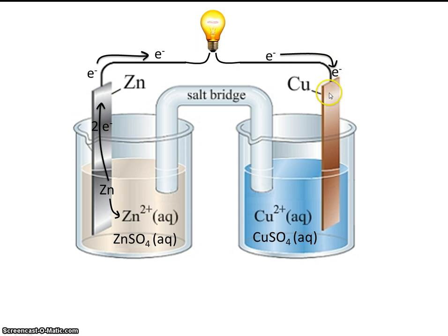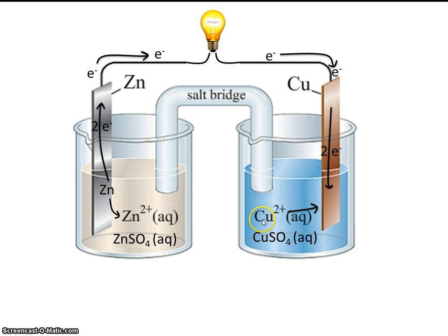The electrons are traveling to this copper electrode, making it electron-rich and giving it a negative charge. The copper plus 2 ion is going to get reduced, so it will be attracted to the negative electrons located in the bar. When copper plus 2 comes in contact with those extra electrons, it turns into elemental copper. Over time, this bar begins to get bigger and bigger as more copper accumulates on it.